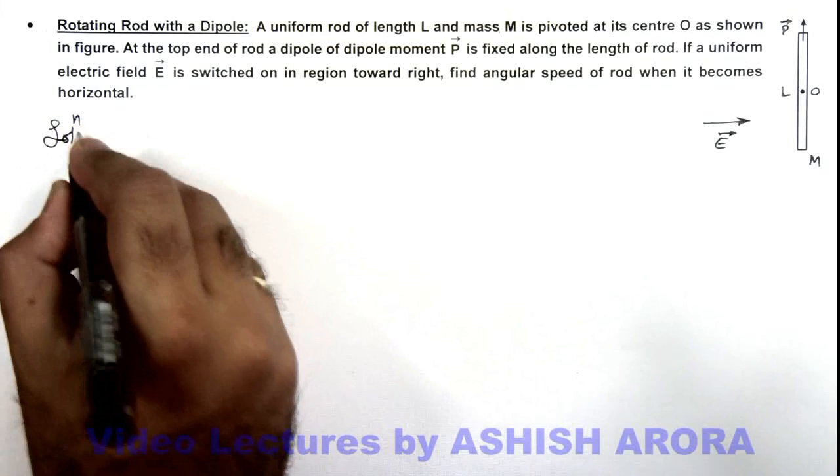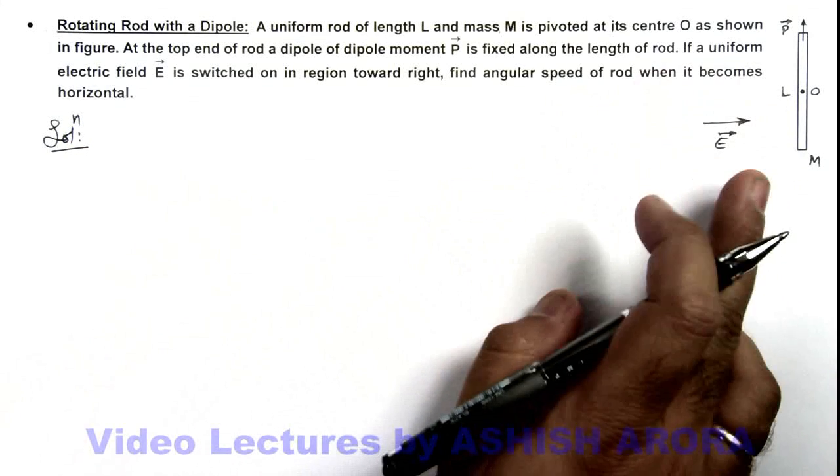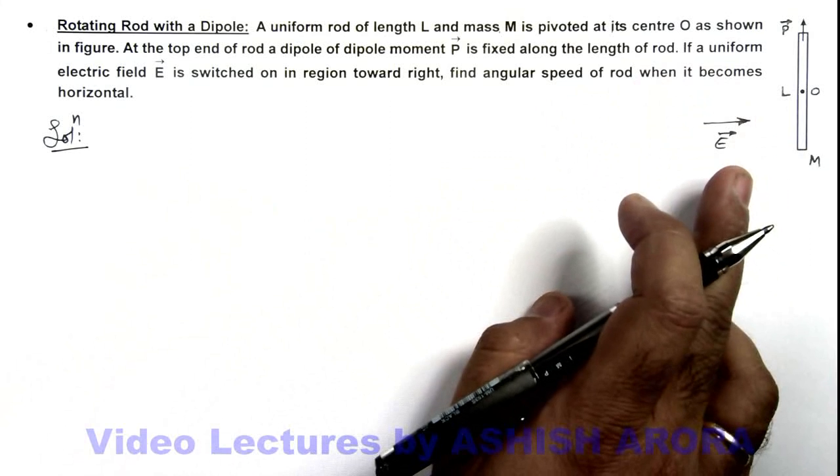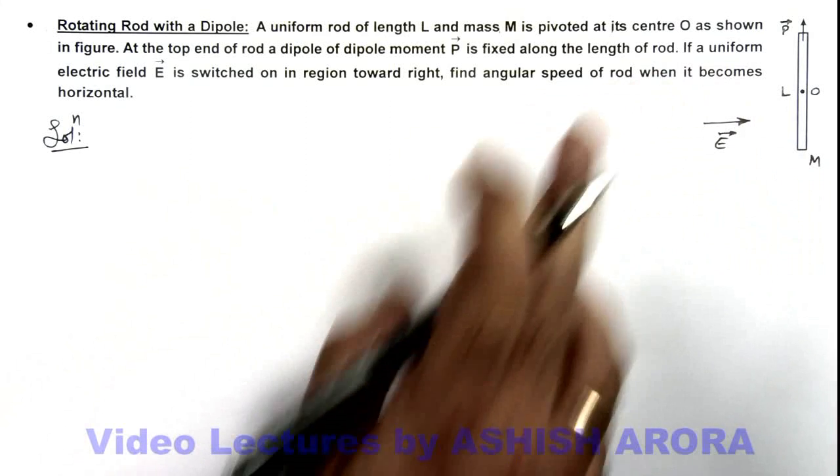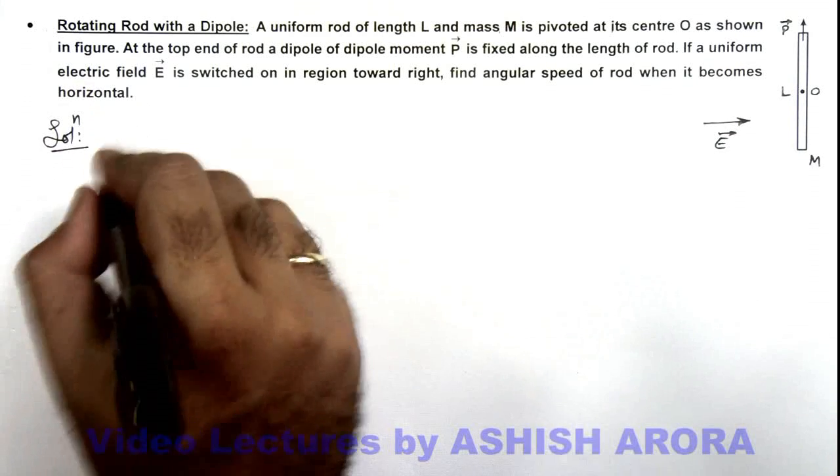So here we can write, if the rod will rotate, then in final state we can conserve energy with respect to the initial state and find out the kinetic energy of this rod.